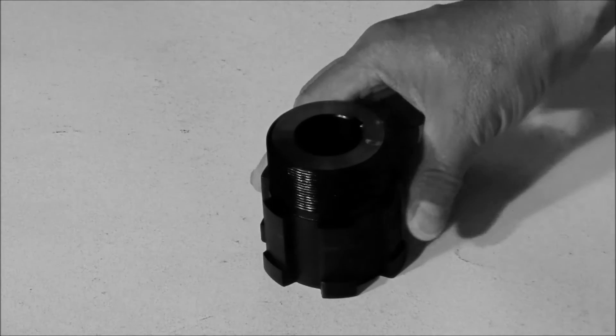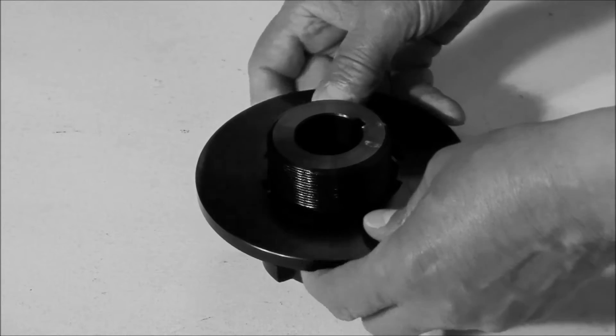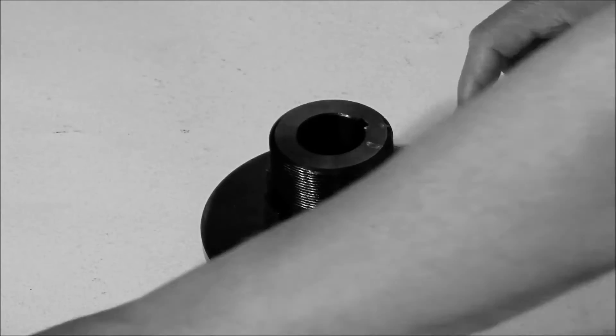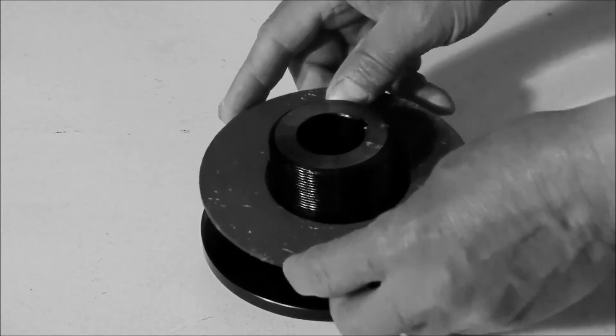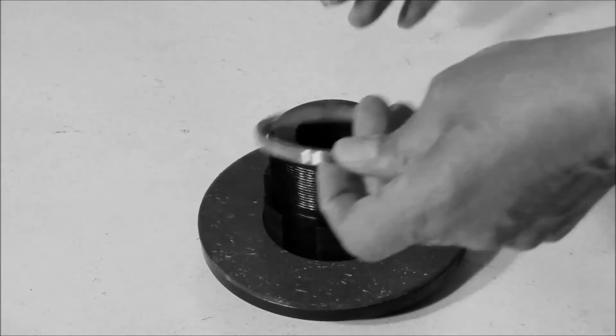So we're going to take the hub and first slide one of the pressure plates on there, then a friction disc, and then the bushing.